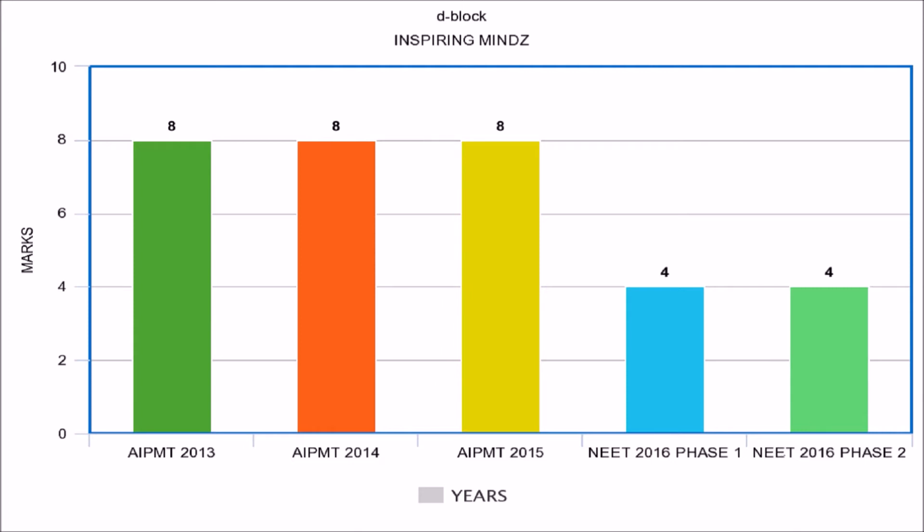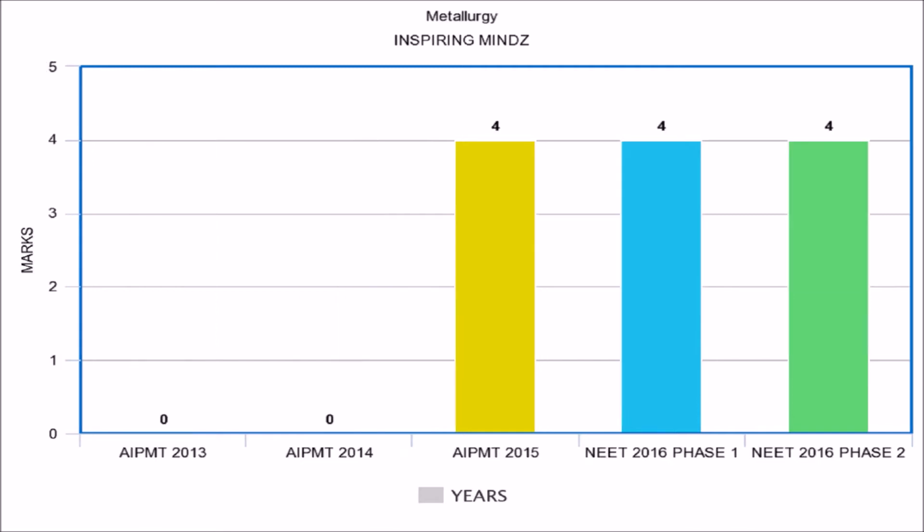For the next topic, in AIPMT 2013 the weightage was 8 marks, in AIPMT 2015 the weightage was 8 marks, and in NEET 2016 Phase 1 and NEET 2016 Phase 2 the weightage was 4 marks.